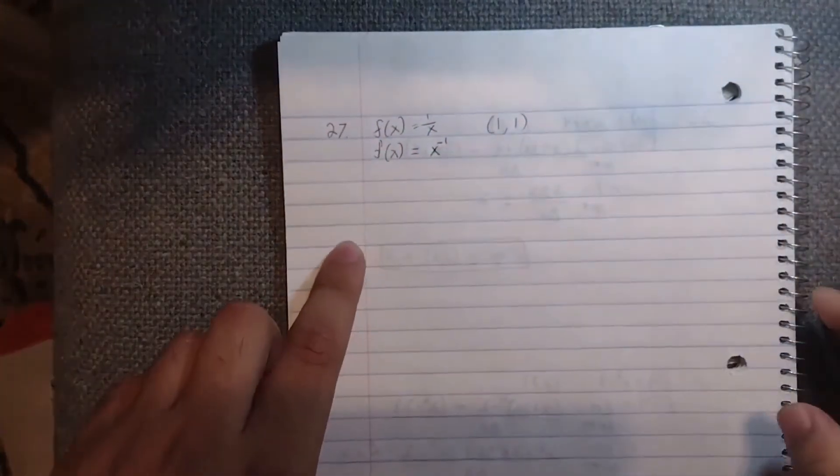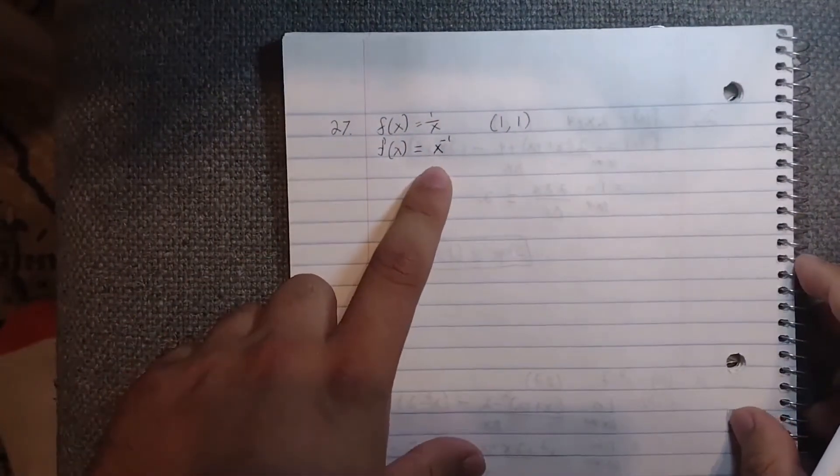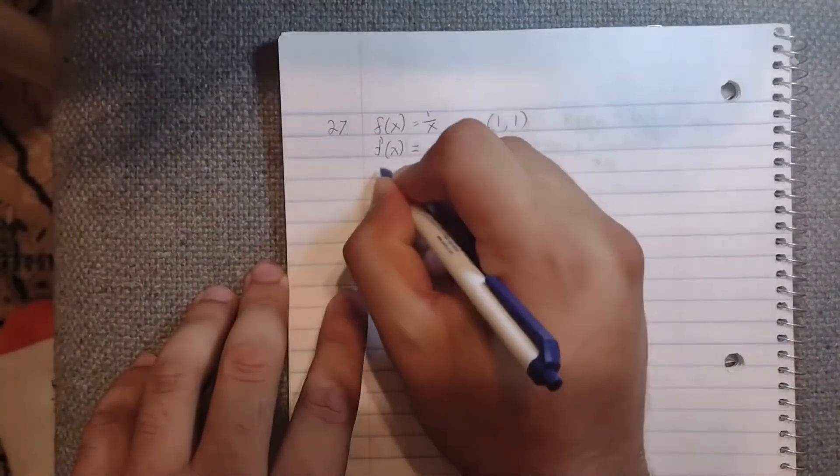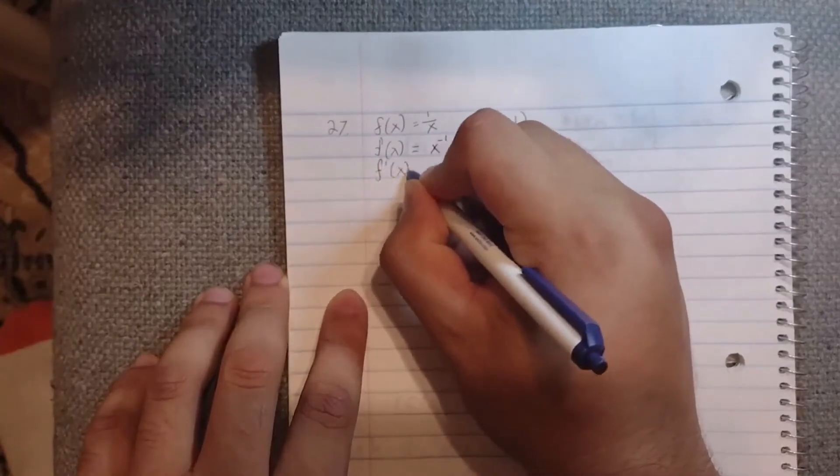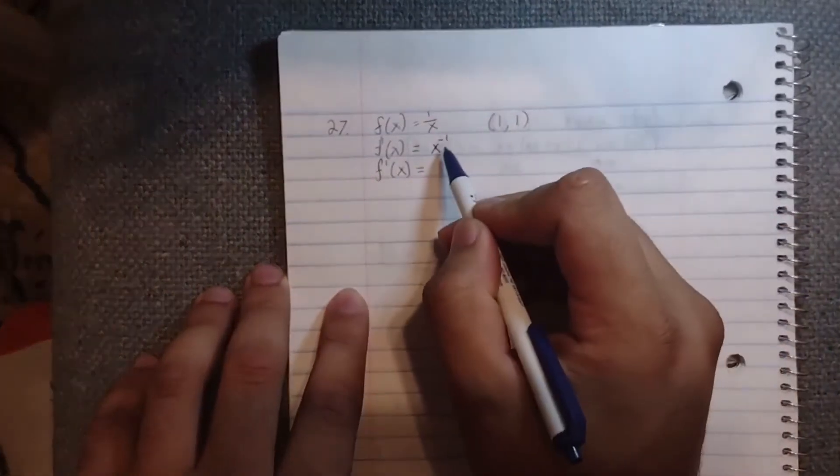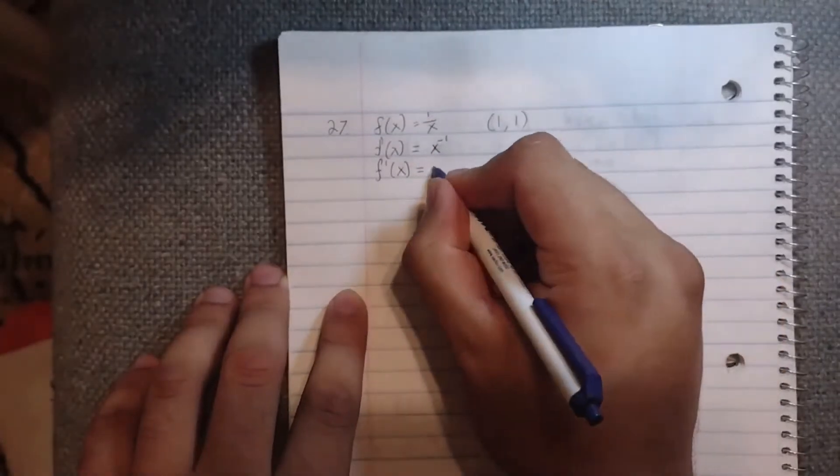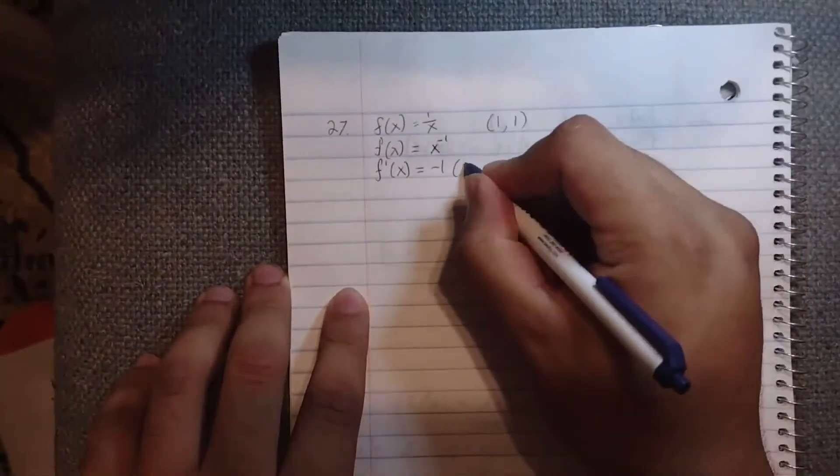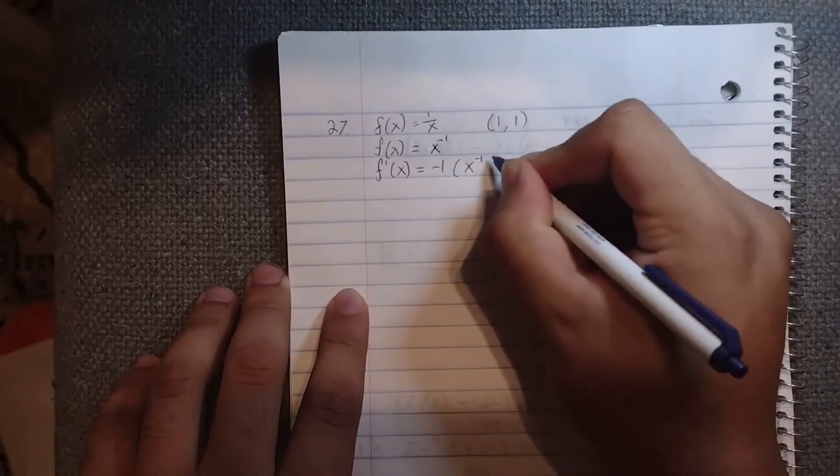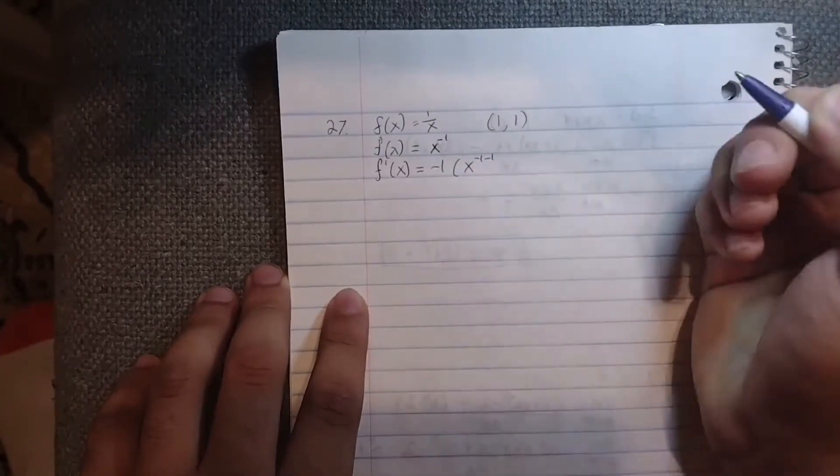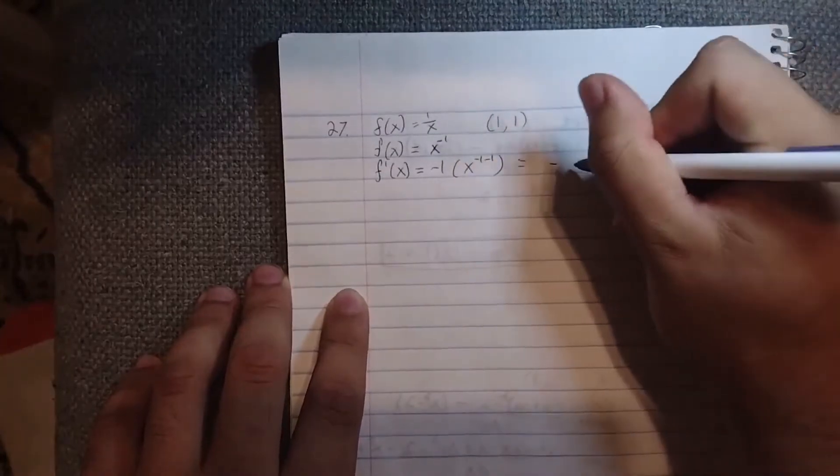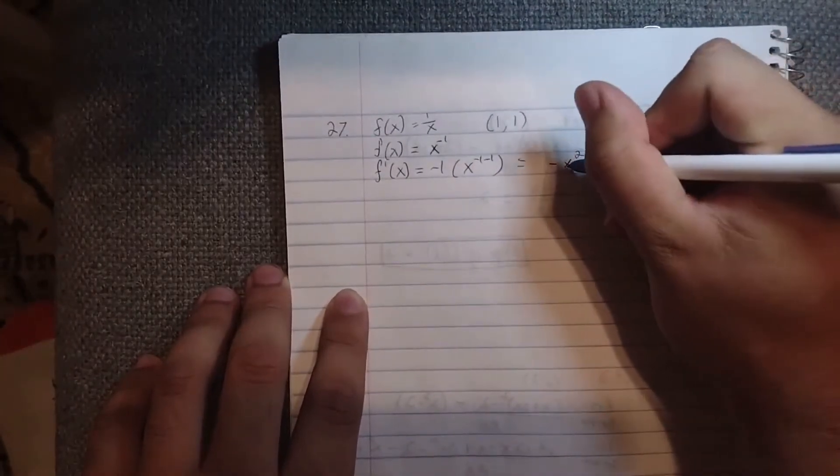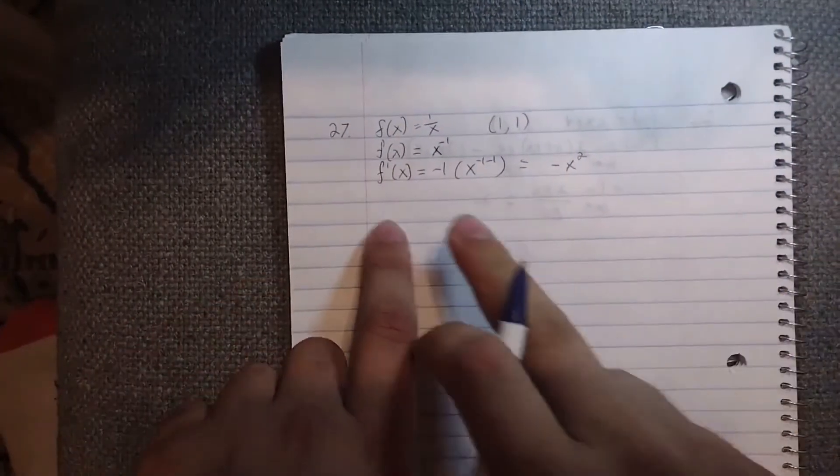Now we can apply the power rule here. The power rule makes it so that f'(x) equals—bring the exponent down—minus 1 times x, and it's going to be minus 1 minus 1, which is -x^(-2).